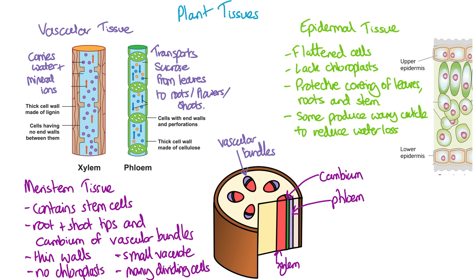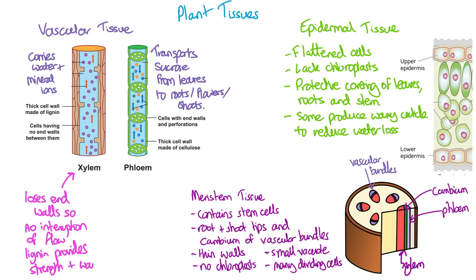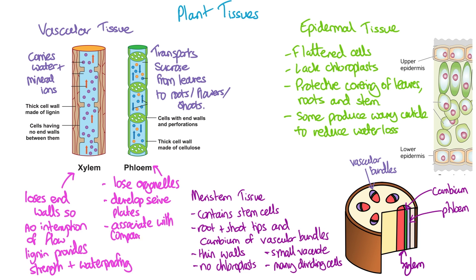The meristem tissue in the cambium produces new xylem and phloem cells. In xylem, the highly specialised cells lose their end walls so there is no interruption to the flow of water, and they create lignin in their cell walls which provides strength, flexibility and waterproofing. Phloem cells lose their organelles and have a very thin layer of cytoplasm. They develop sieve plates — holes in their end walls. They associate with companion cells which provide the ATP required for processes like active transport, since the phloem cells no longer have any organelles.